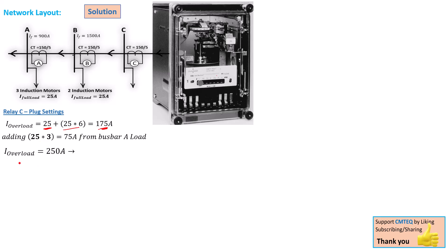That gives us a total overload of 250 amps that relay C should be able to allow to flow without tripping. Based on that, we can calculate the plug setting for this relay using the 90% pickup setting for the normal current condition. Note that the combined normal load on A and B that relay C will see is equal to 125 amps. But 125 amps is much less than 250 amps, so we need to calculate our plug setting based on the overload conditions.